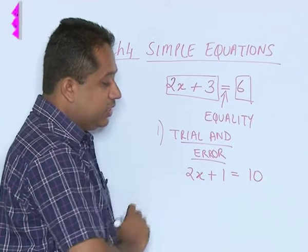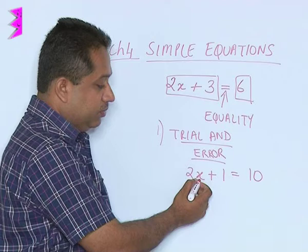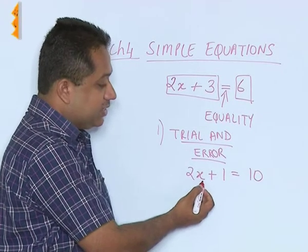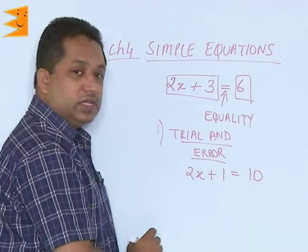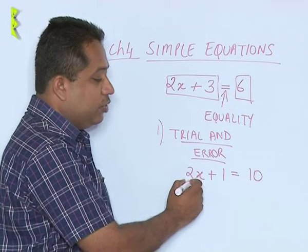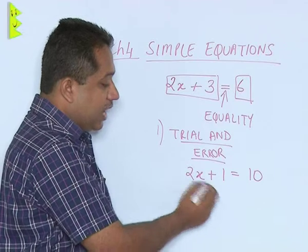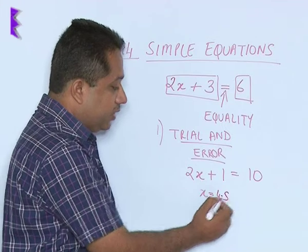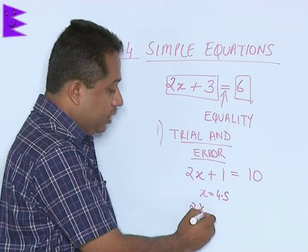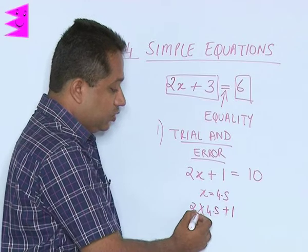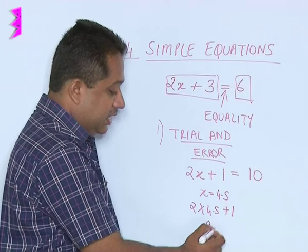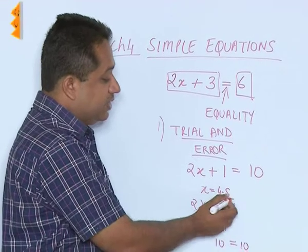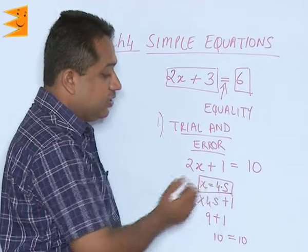So it is coming more than this. That means when I am substituting x is 4, I am getting a value which is 9 which is less than this, and when I am substituting x is 5 I am getting a value more than this. So that means it has to be between 4 and 5. So let us take half of that, that is 4.5. So if I am taking x is 4.5, what happens? This will become 2 into 4.5 plus 1. So 2 into 4.5 we know is 9, 9 plus 1 will give us 10. So we get 10 equal to 10. So we can say that the value of x is 4.5.